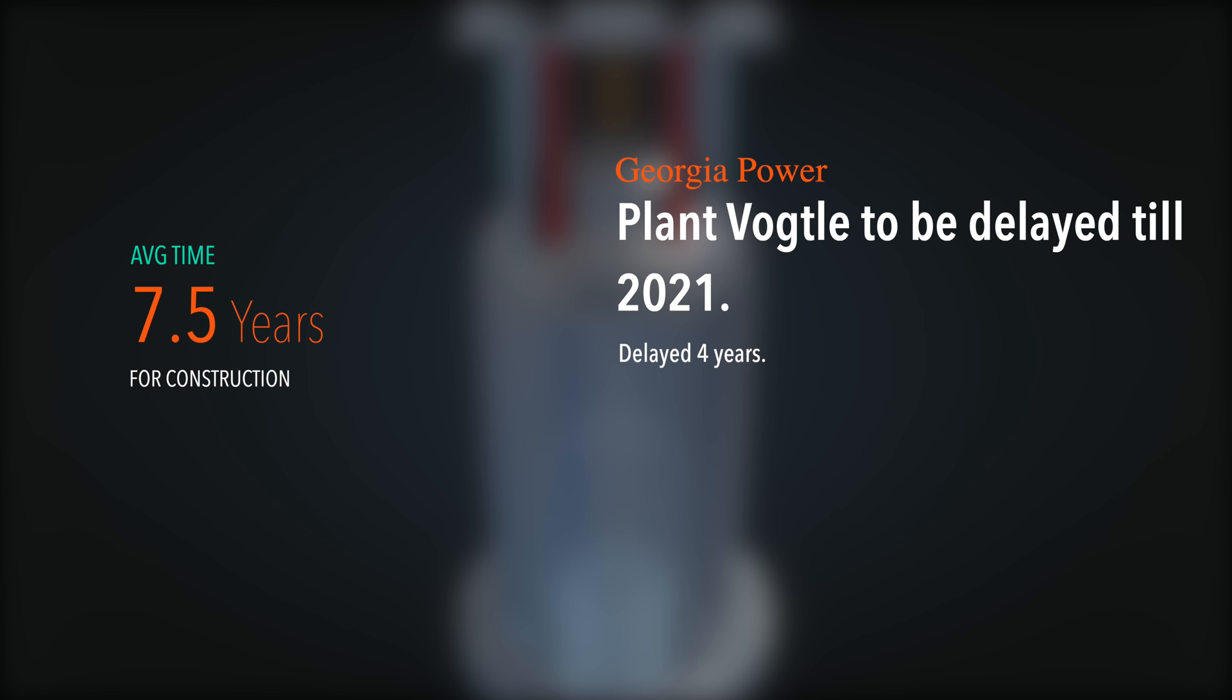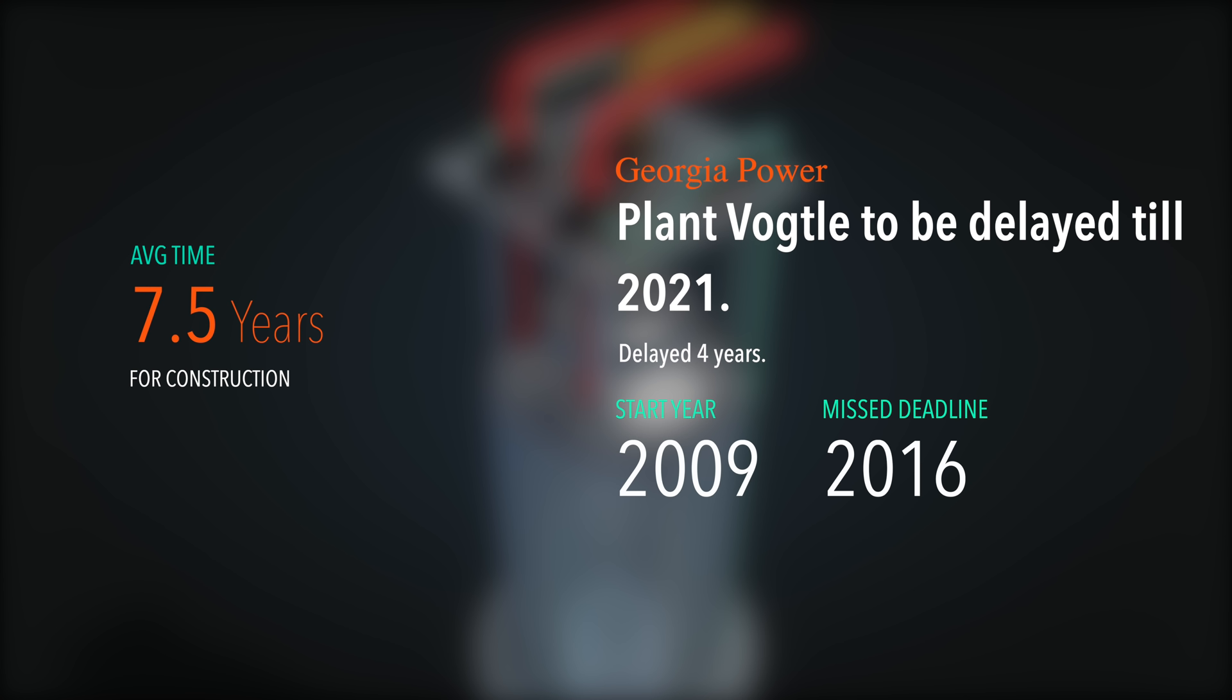Georgia's Vogtle nuclear expansion is one example. The project started back in 2009 with an estimated final cost of 14 billion dollars. It was supposed to be up and running by 2016. Now it seems the facility will most likely start working in 2021 with a total estimated final cost of 23 billion dollars.